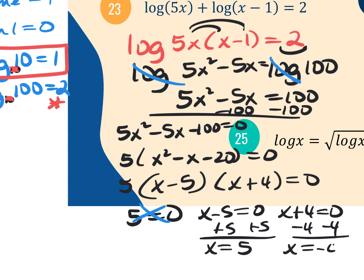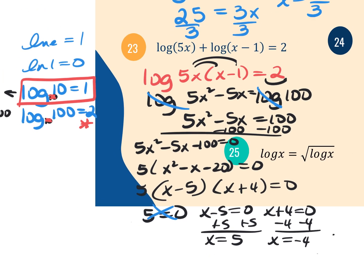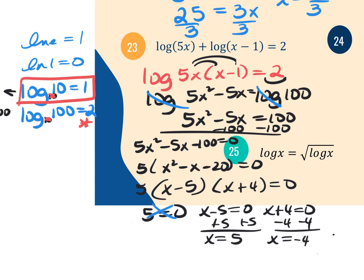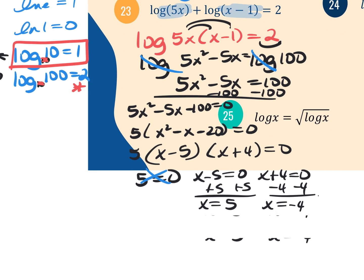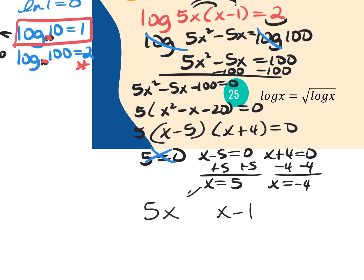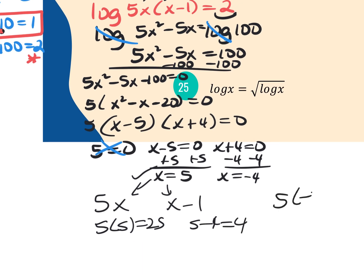Setting each factor equal to zero: X minus 5 equals 0 gives X equals 5; X plus 4 equals 0 gives X equals negative 4. Since the original equation was a log, check both answers. Plugging in negative 4 to 5X gives negative 20 — that's negative, so reject it. X equals 5 gives 5 times 5 equals 25 and 5 minus 1 equals 4, neither negative, so X equals 5 is the only good answer.